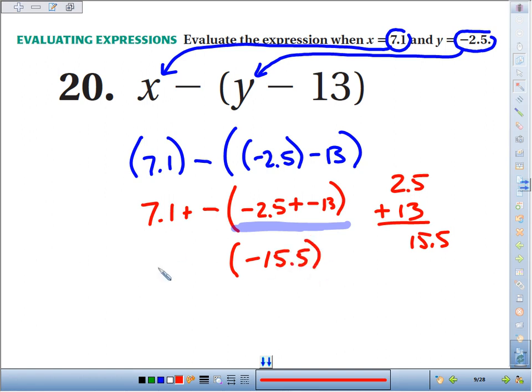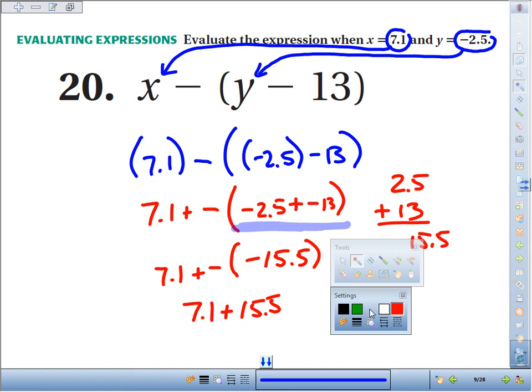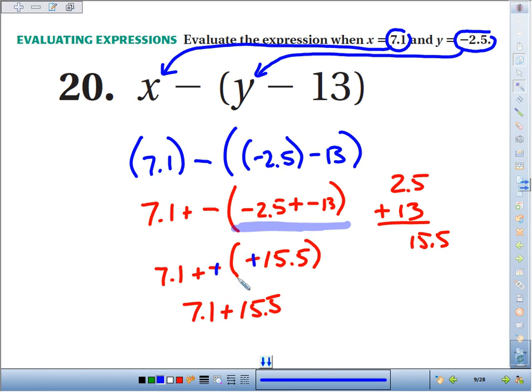So what do we have? We've got 7.1 plus the opposite of negative 15.5. Well, what's that going to be? If I add the opposite of a negative 15.5, I'm adding a positive 15.5. Or, of course, as we're trained to do, every time we see two negatives next to each other, chop chop. 7.1 plus positive 15.5.